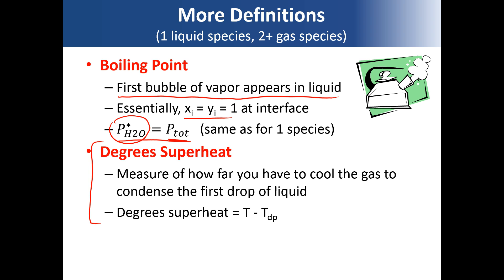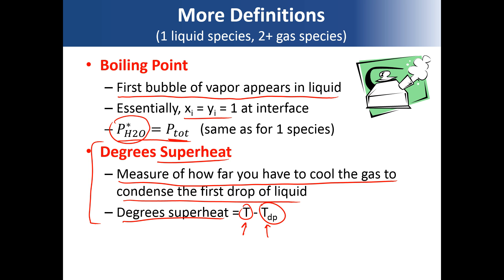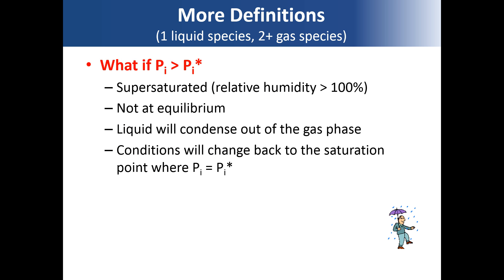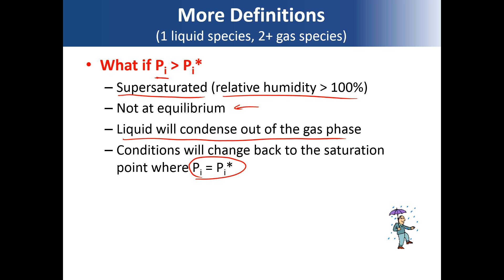Degrees superheat is how far you have to cool the gas to condense the first drop of liquid — how many degrees you're above the dew point. If the partial pressure is greater than the liquid vapor pressure, we call that supersaturated, or relative humidity greater than 100%, and this is a system not at equilibrium. It's a metastable state; the liquid will condense out of the gas phase until the partial pressure equals the liquid vapor pressure at the saturation point.